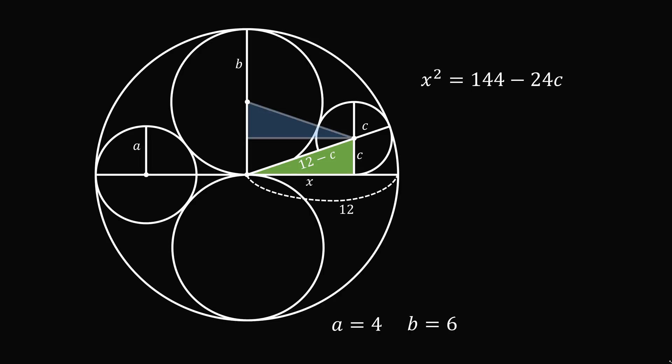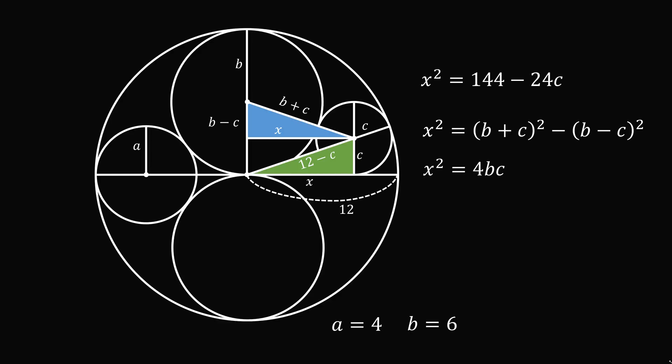Now, let's construct the following right triangle. One leg will be equal to x. The other leg will be the difference in the lengths of the radii, so it will be equal to b minus c. The hypotenuse will be the sum of the radii lengths, so it will be equal to b plus c. Solving for x squared: x squared is equal to the square of (b plus c) minus the square of (b minus c). We can simplify this to get x squared is equal to 4bc. Substituting in that b is equal to 6, we have x squared is equal to 24c.